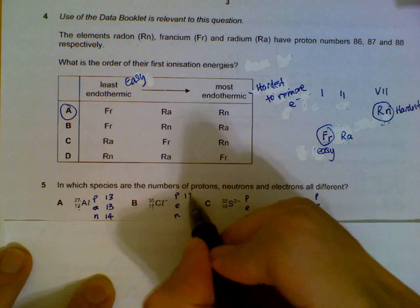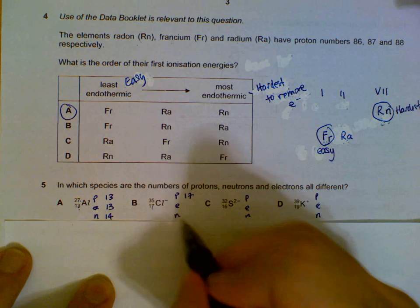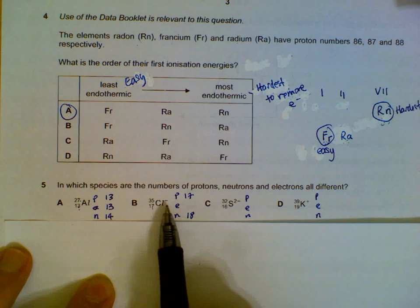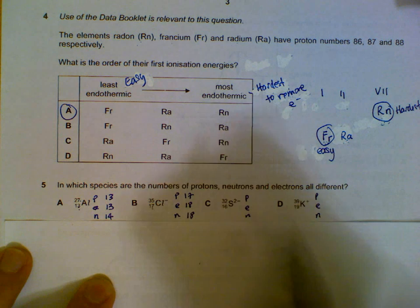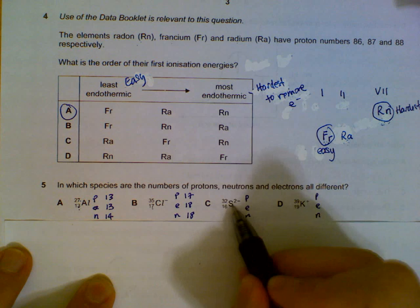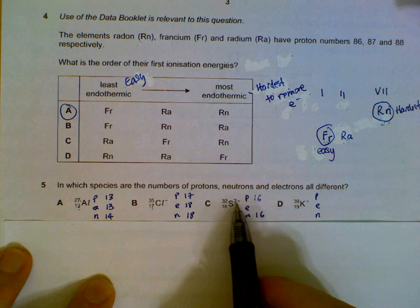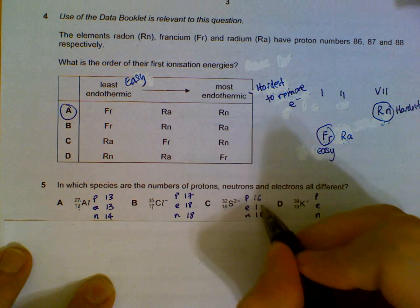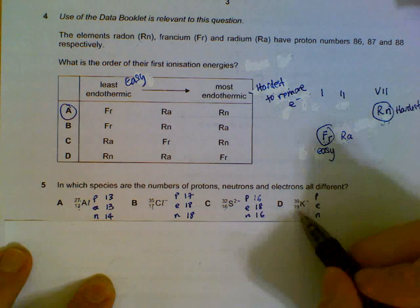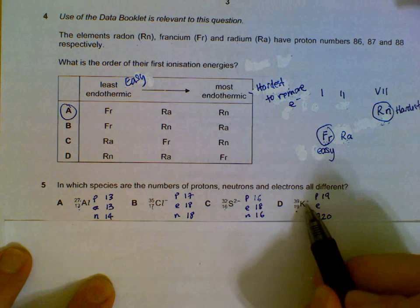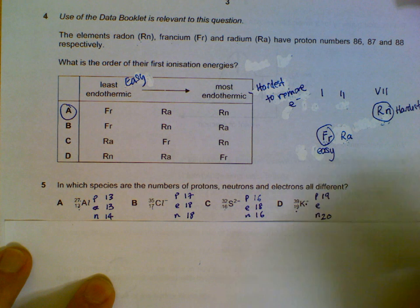For chlorine: 17 protons, 35 minus 17 gives 18 neutrons. There's a minus-one charge, meaning one more electron than protons, so 18 electrons. For sulfur: 16 protons, 32 minus 16 gives 16 neutrons, and with a 2-minus charge we have two extra electrons, giving 18 electrons. For potassium: 19 protons, 39 minus 19 gives 20 neutrons, and a plus-one charge means one fewer electron than protons, so 18 electrons.